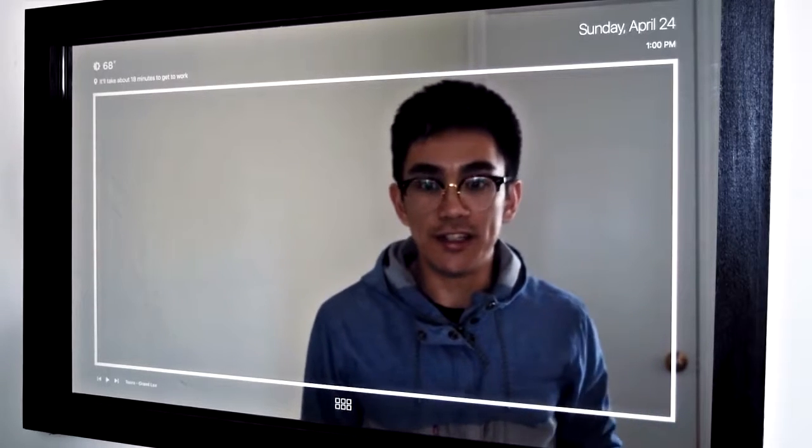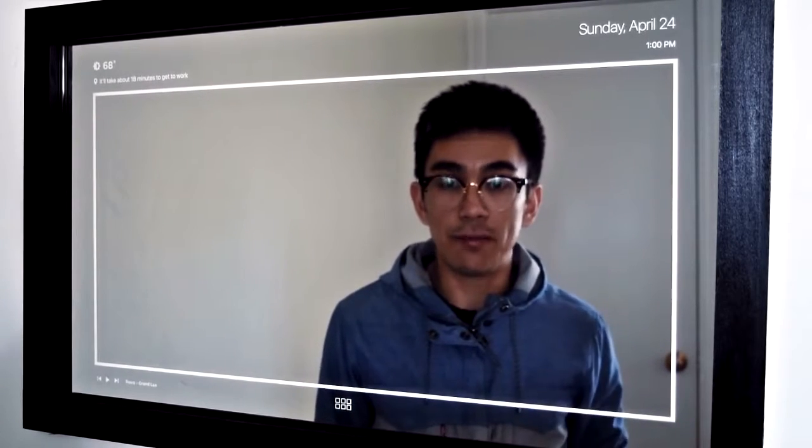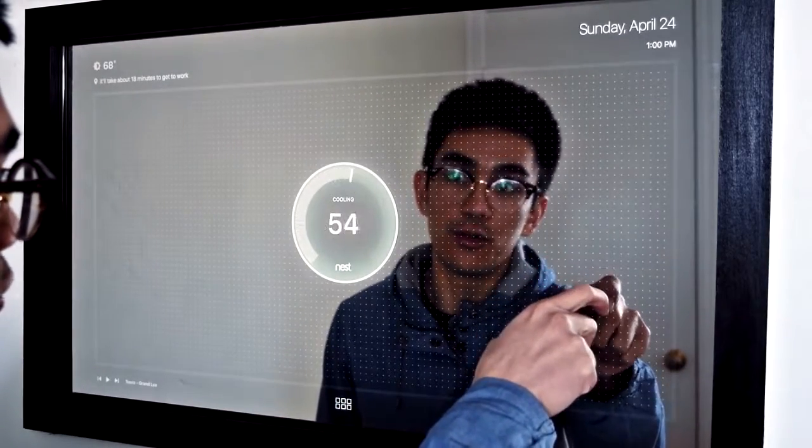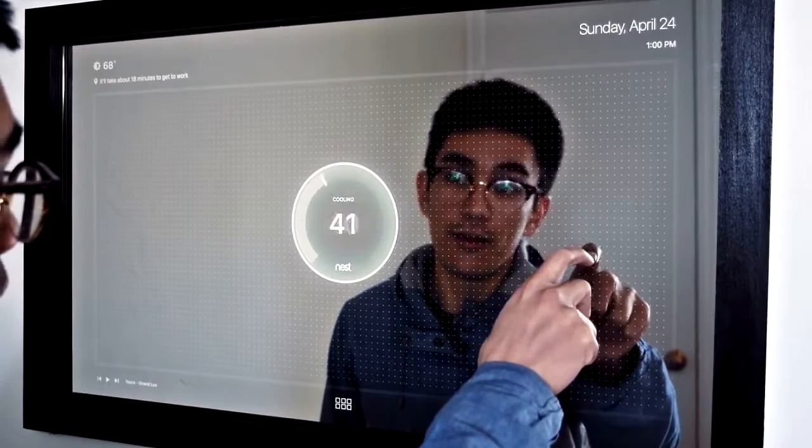Now another thing that I can do is I can control the temperature of my apartment on this mirror. To do so, all that I would have to do is hold up two fingers and rotate. So this allows me to control the temperature in my apartment through Nest.